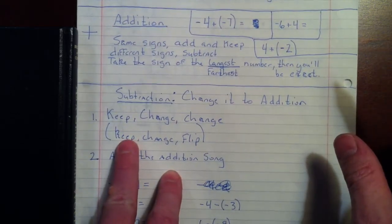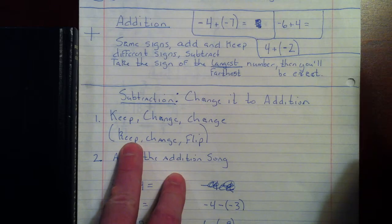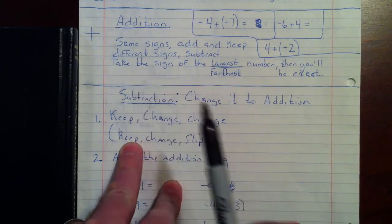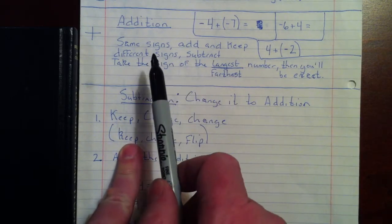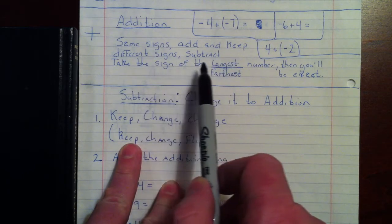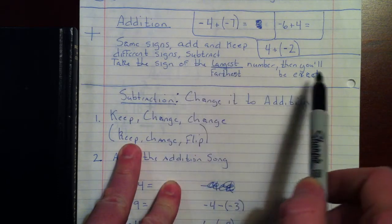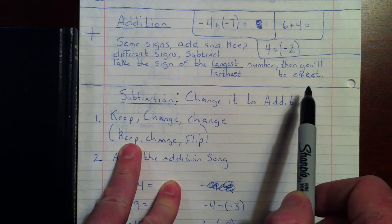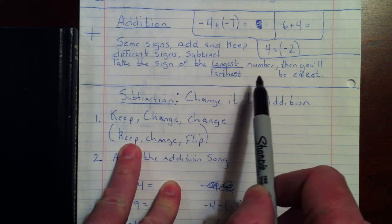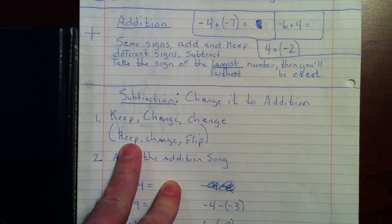We also learned some addition rules. Remember the addition rules — we can do the Row, Row, Row Your Boat song: same sign, add and keep; different sign, subtract; take the sign of the largest number, then you'll be exact. Or you can say take the sign of the furthest number from zero, then you'll be exact.